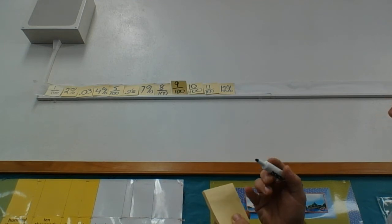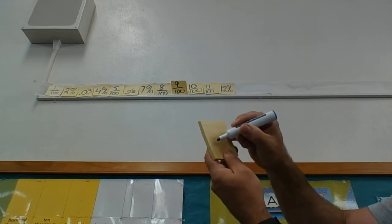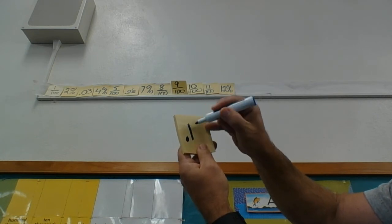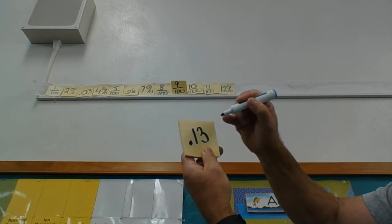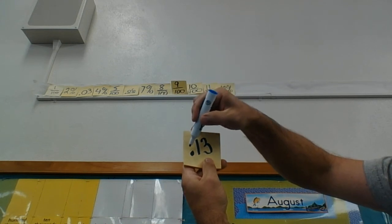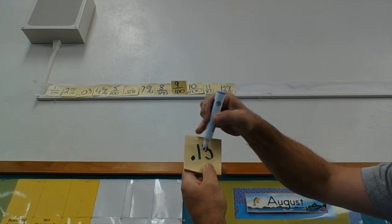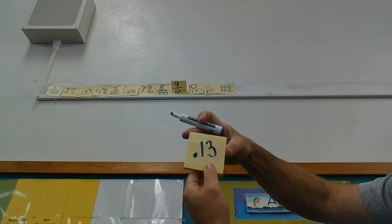So the way I write 13/100ths is I write 13/100ths. And as we know, anything to the left of the decimal point is a whole, and anything to the right of the decimal means part of a whole.